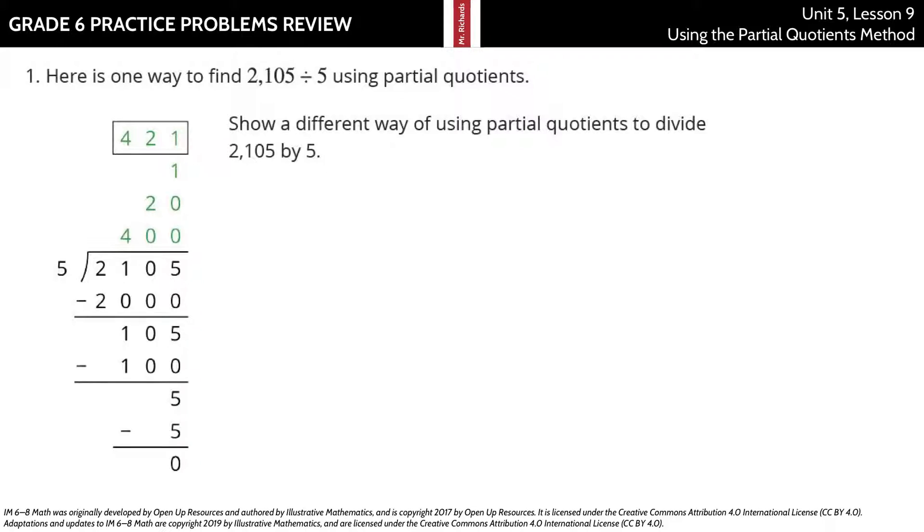We've done the Partial Products Method and so partial quotients will be very similar. Here's one way to find 2,105 divided by 5 using partial quotients. Show a different way.